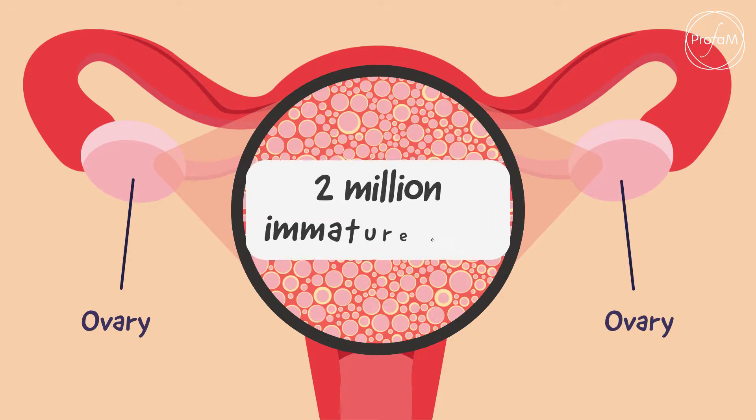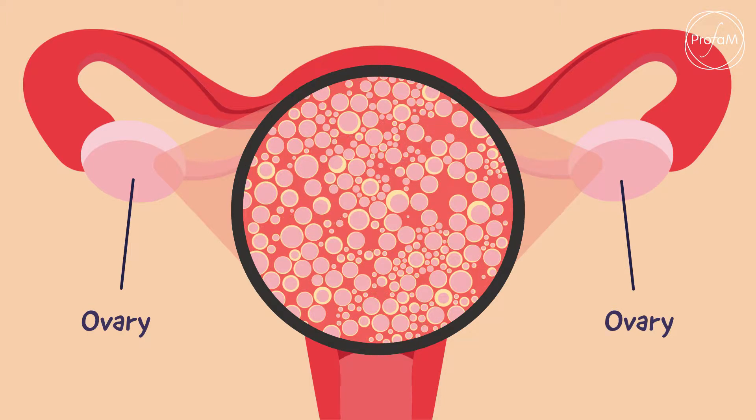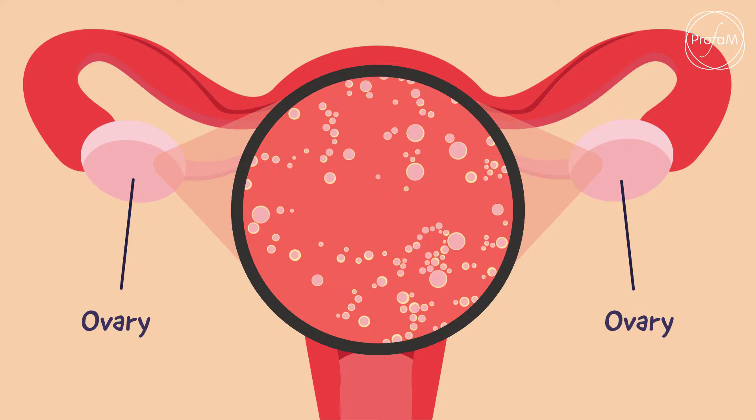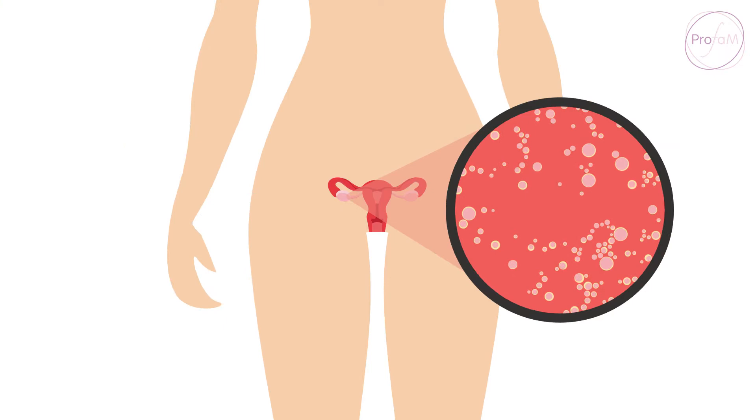A woman is born with over 2 million immature eggs. As a woman progresses through her reproductive years, this egg pool gets smaller and the quality of the eggs also diminishes.